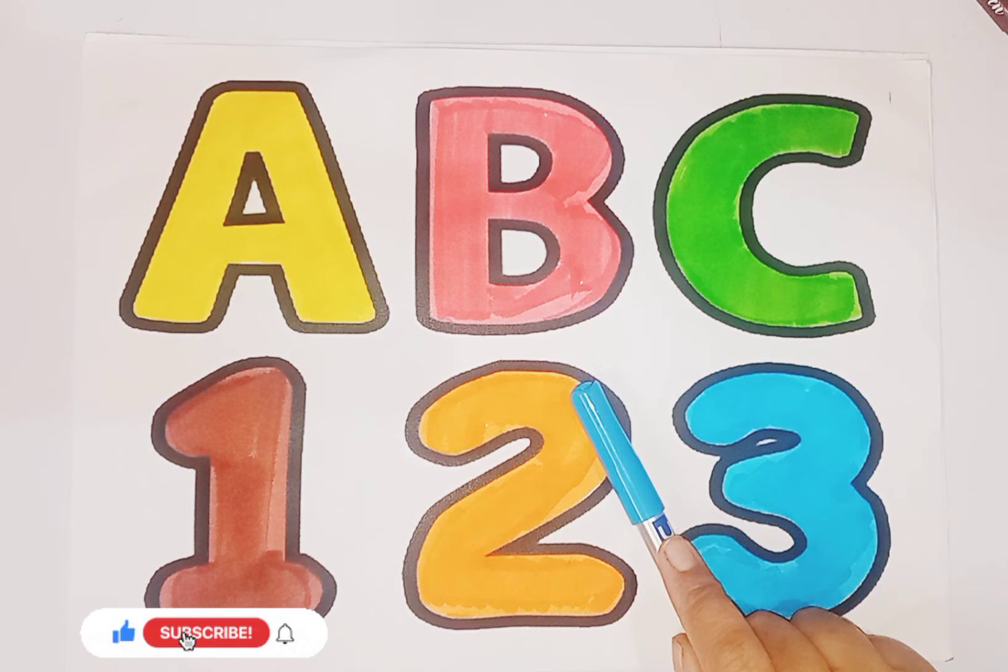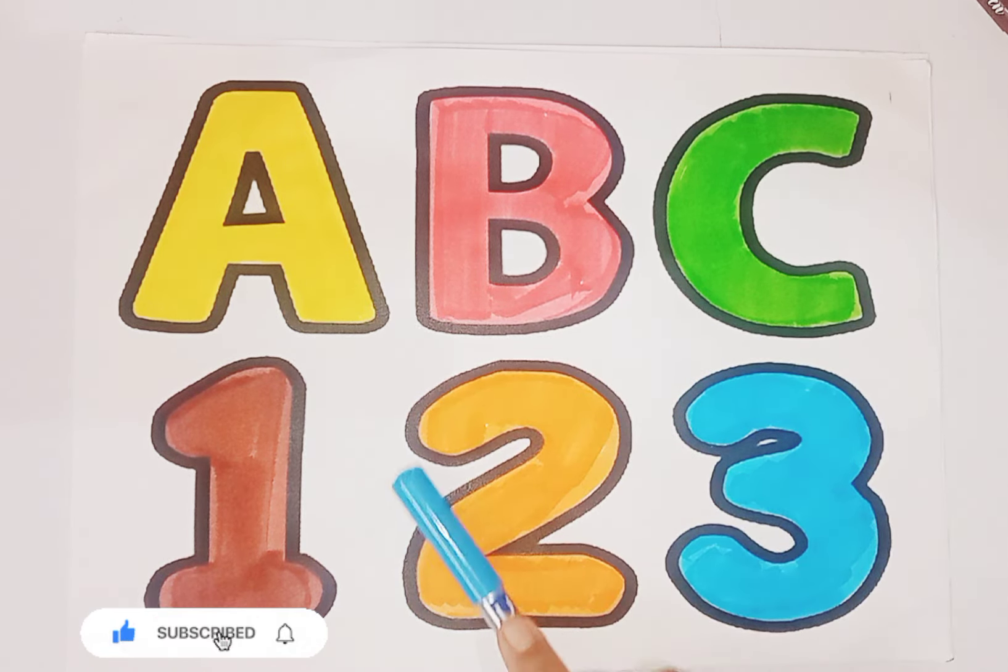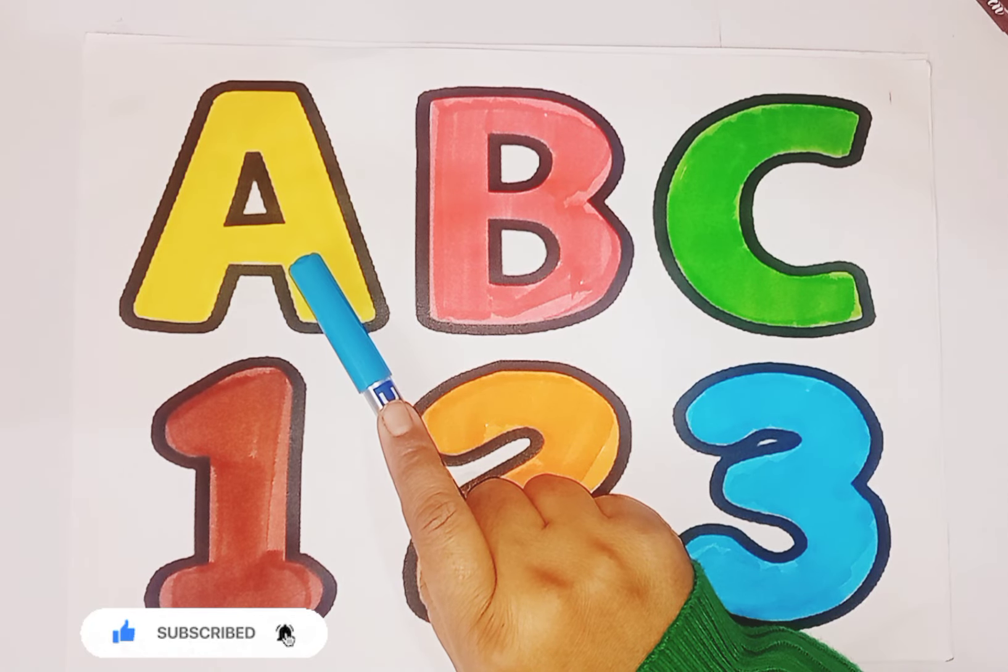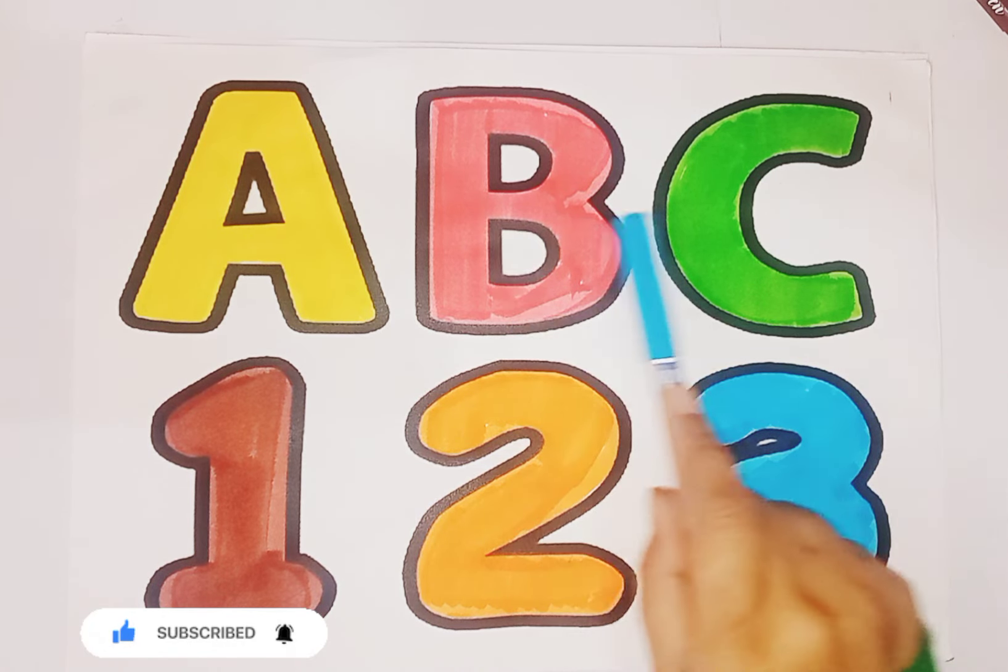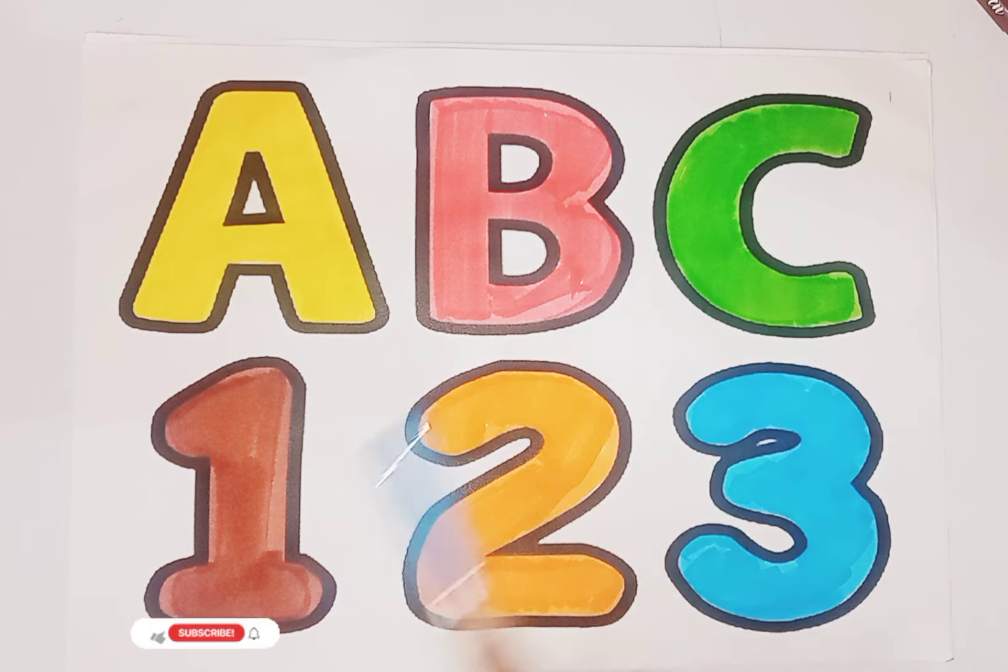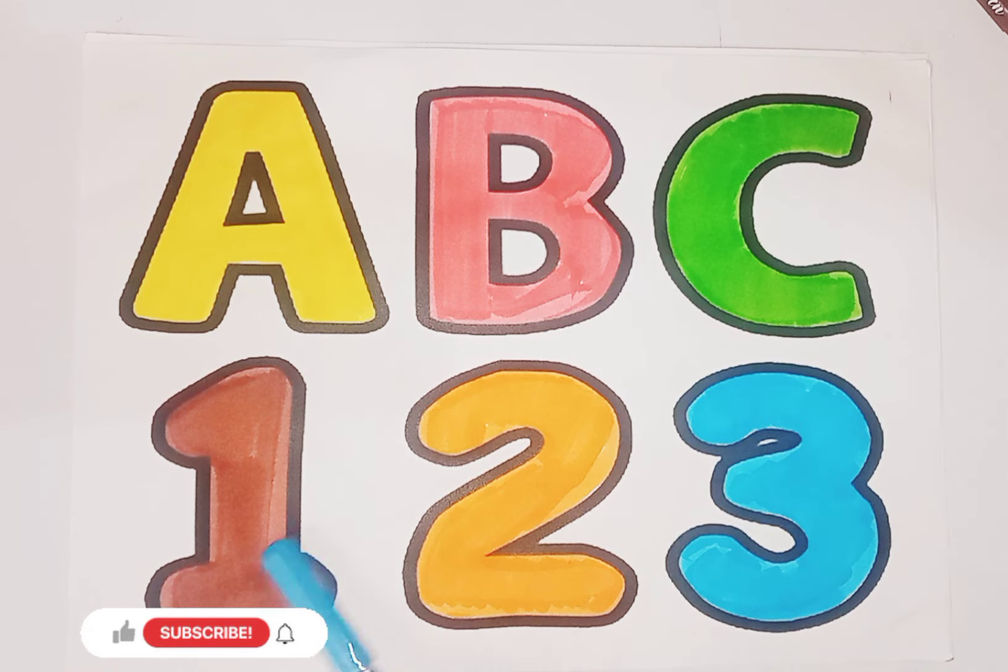So kids, today we learn alphabet and numbers. A for Apple. B for Ball. C for Cat. 1, O-N-E-1. 2, T-W-O-2. 3, THR double E, 3.